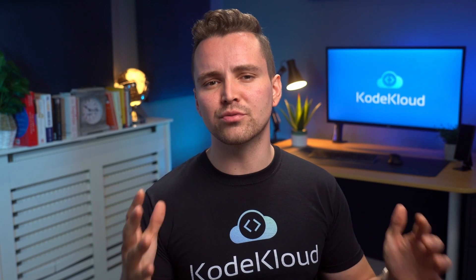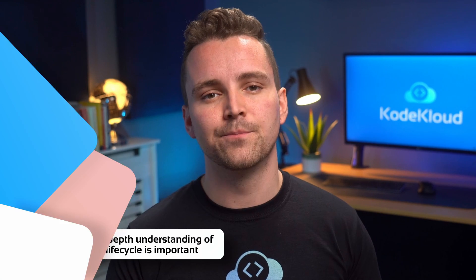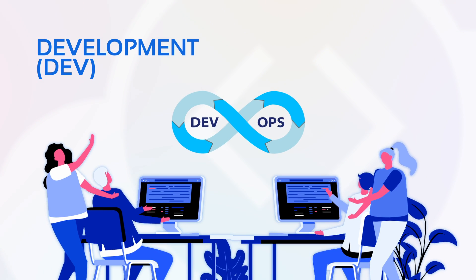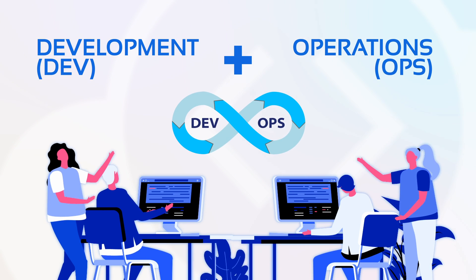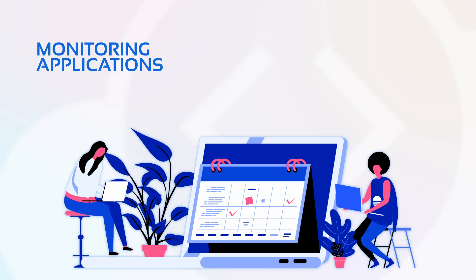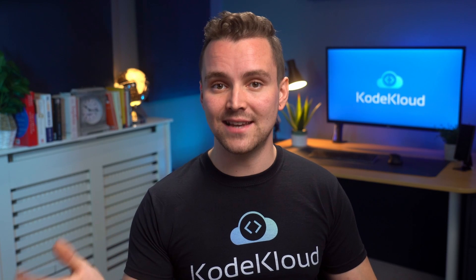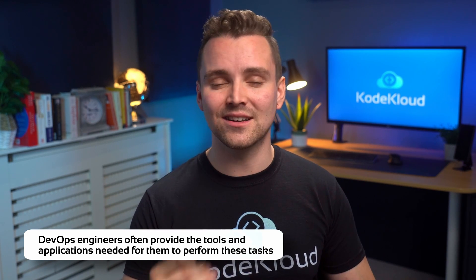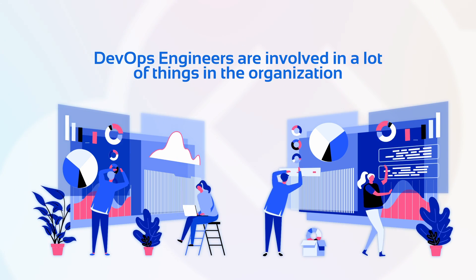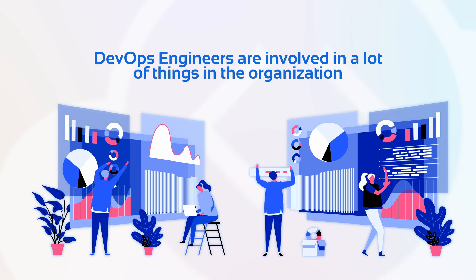They basically create an efficient production line for software. Therefore, having an in-depth understanding of the software lifecycle is important. DevOps engineers also improve collaboration between the development and operations teams, and they are also responsible for monitoring applications and parts of the company's infrastructure. This is so that they can identify key points that can further improve how the software is delivered. It's not only devops engineers that perform monitoring — developers and operations also perform monitoring to some extent. DevOps engineers often provide the tools and applications needed for them to perform these tasks. As you can see, devops engineers are involved in a lot of things in the organization and have a very long list of responsibilities.